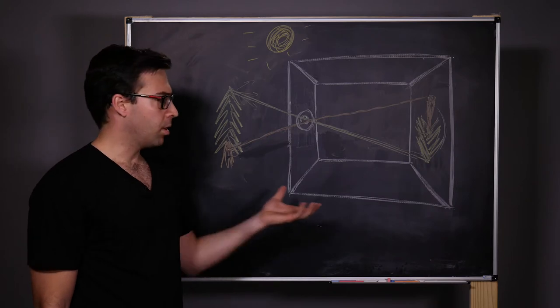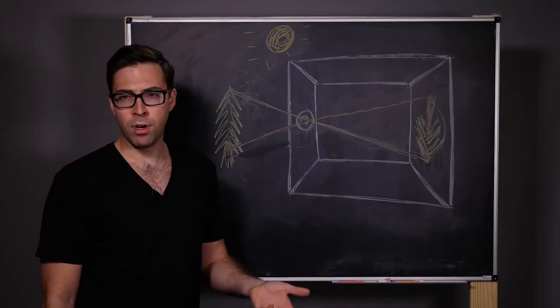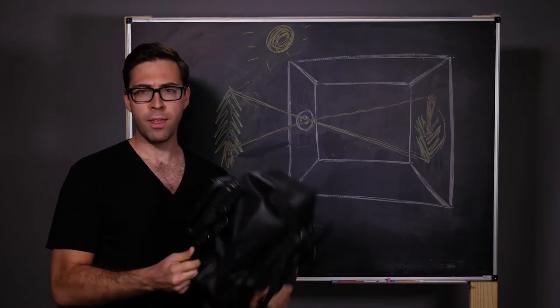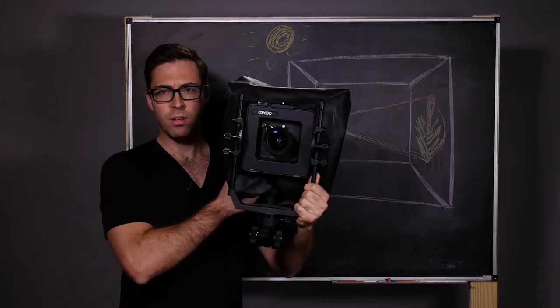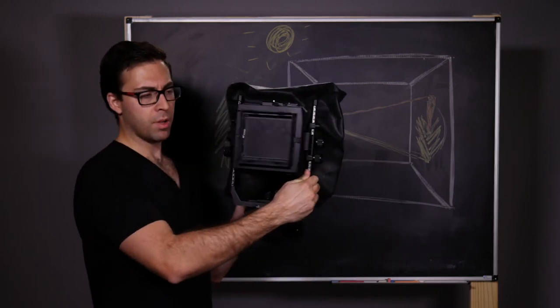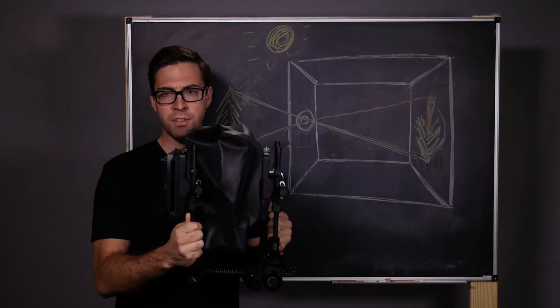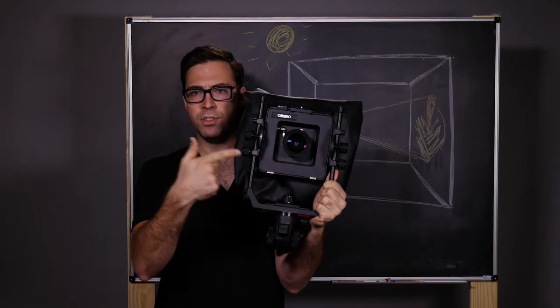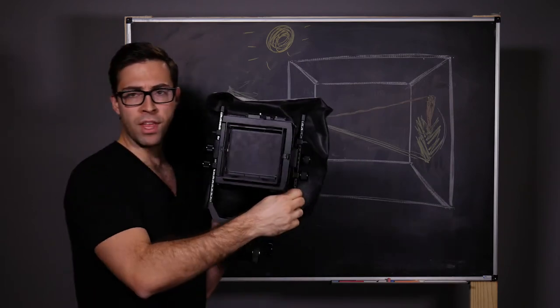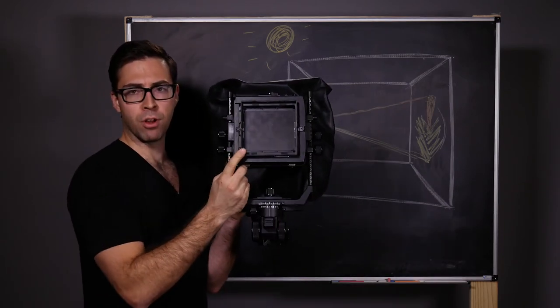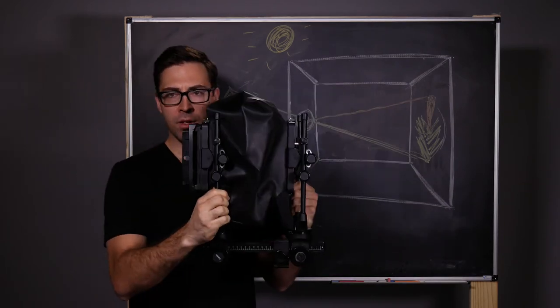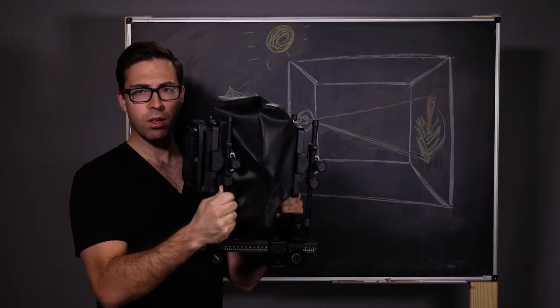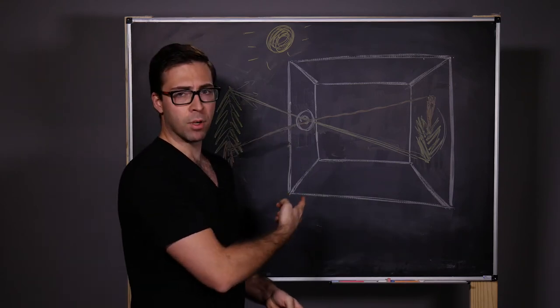So how do we get from this camera obscura to a camera as we know it today? Well, let's take a look at something like this. Now, this is a view camera. But essentially, you can think of this as a camera obscura, because it has an opening in one end. This is the lens. And it has sort of a wall that the image is projected on. This is a ground glass viewing screen. And in the middle is a dark room, a dark box.